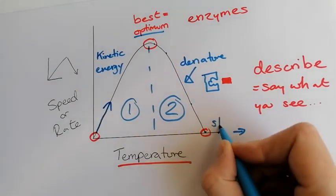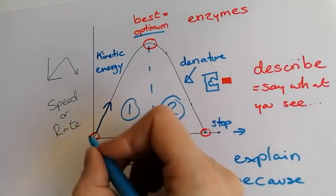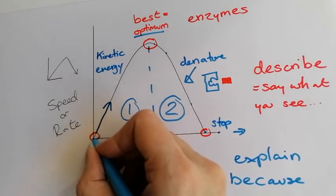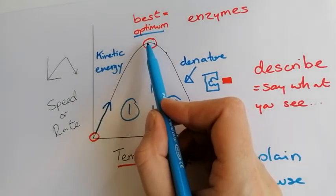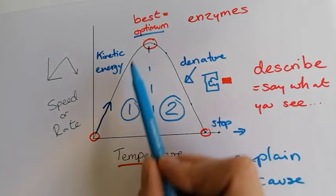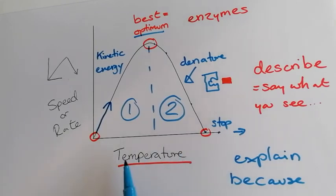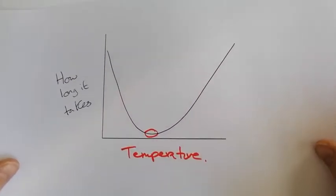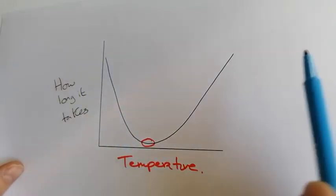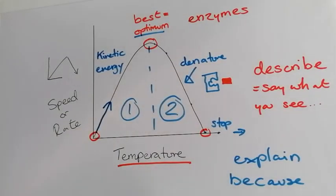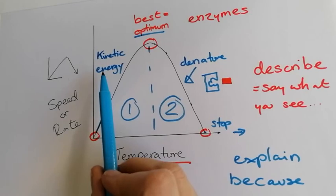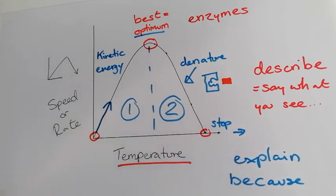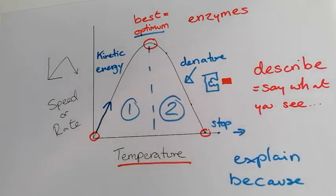Here we've got a complete stop because everything is too hot. Here it's not doing anything because it's too cold. Here it's working really fast because the reaction is at its optimum temperature. So, if you see a graph that goes up and down, or numbers in a table that are weird in the middle, you know it's going to be an enzyme graph. In section one it's kinetic energy — the more, the faster. In section two, so much heat causes the enzyme to denature, so the reaction stops.